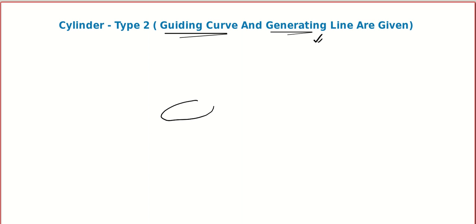I hope you still remember what a guiding curve is. Imagine an ellipse, its center, and its axis. The generating line means any line parallel to the axis. That's why we need the direction ratios of the generating line — so that it stays parallel to the axis and touches the guiding curve. If you draw all such lines, you'll be able to visualize that cylinder.